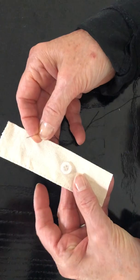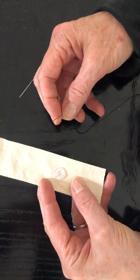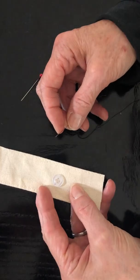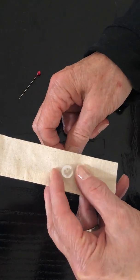I have black thread for a white button just so that you can see how I'm attaching the button to the fabric.